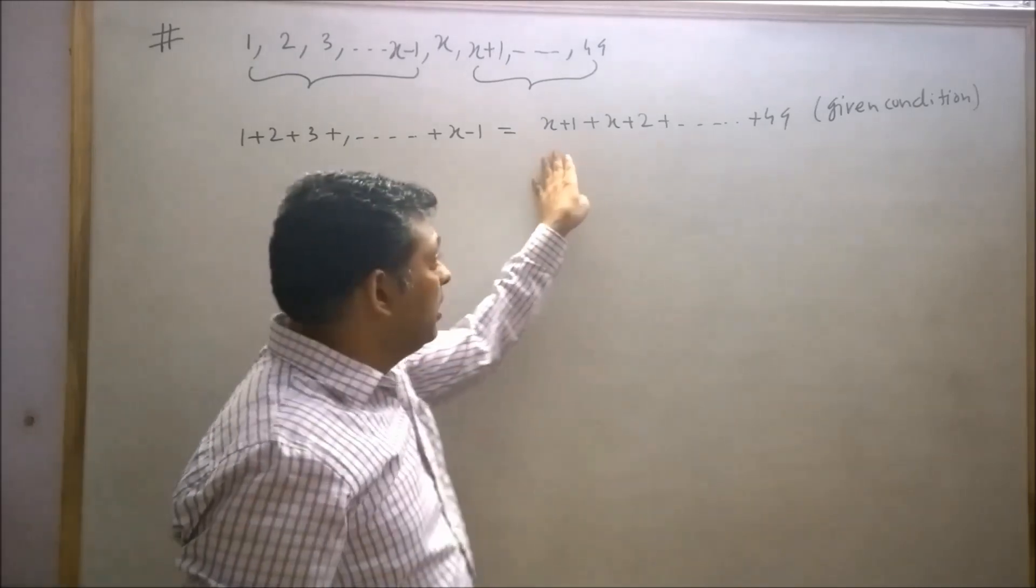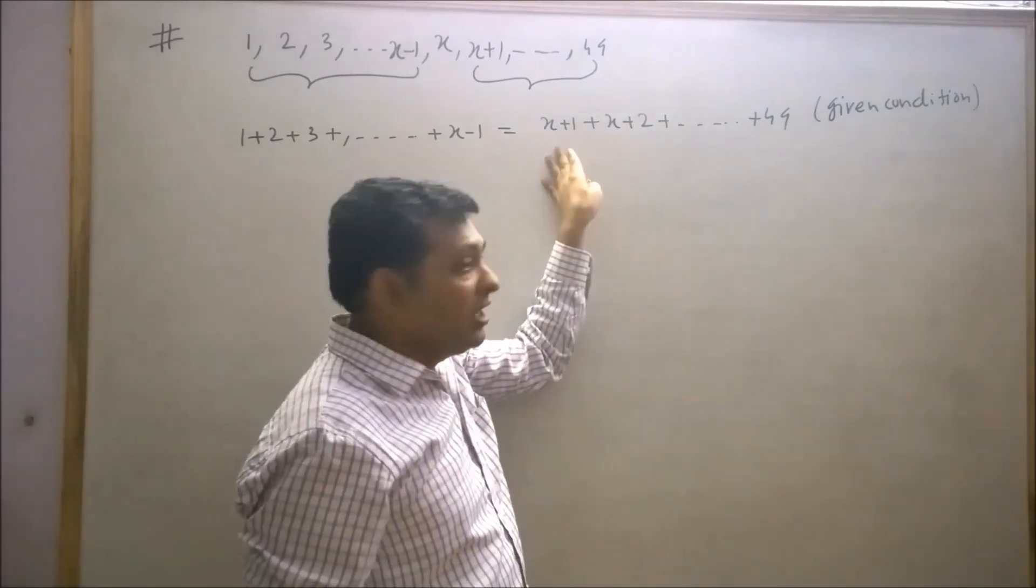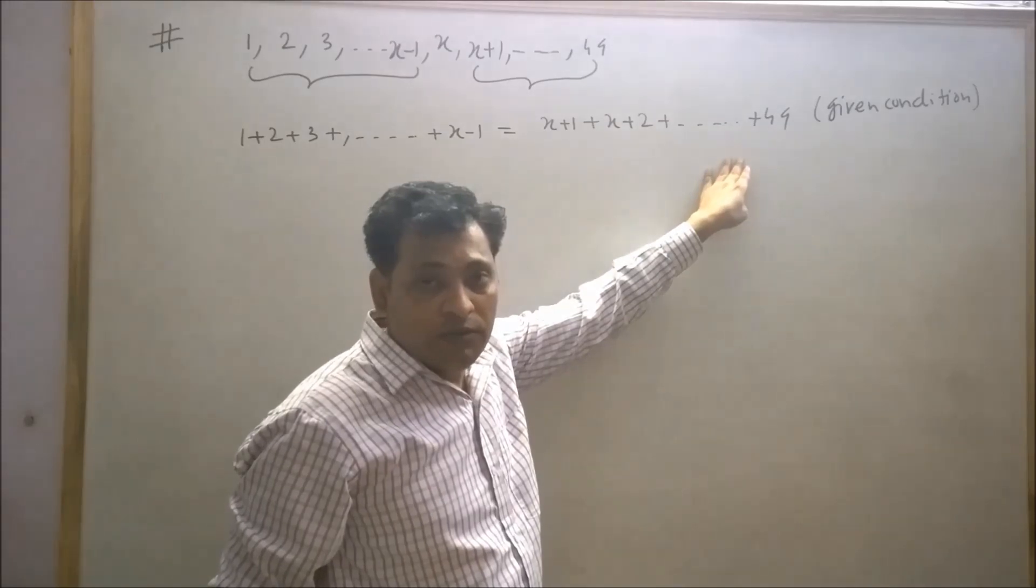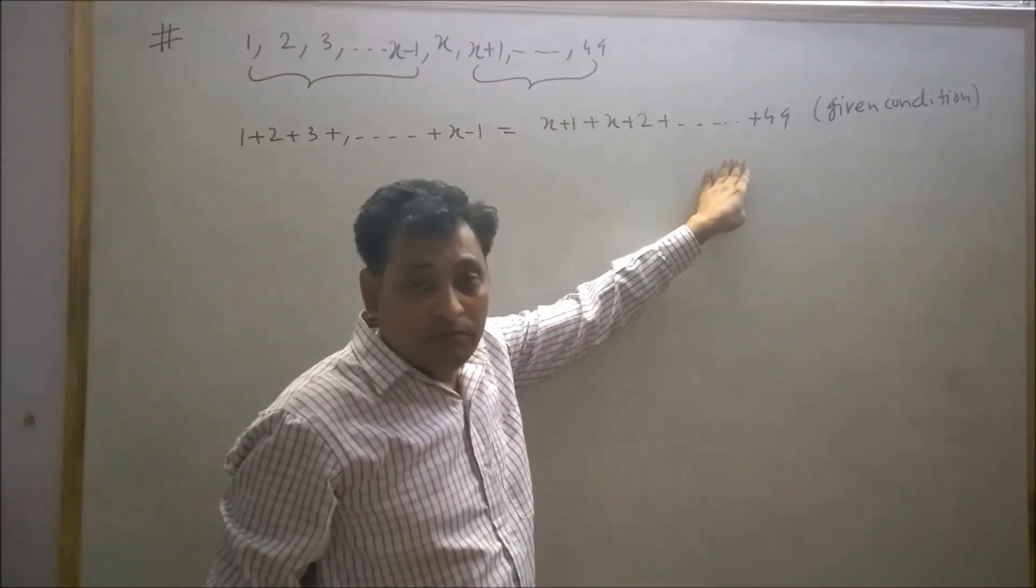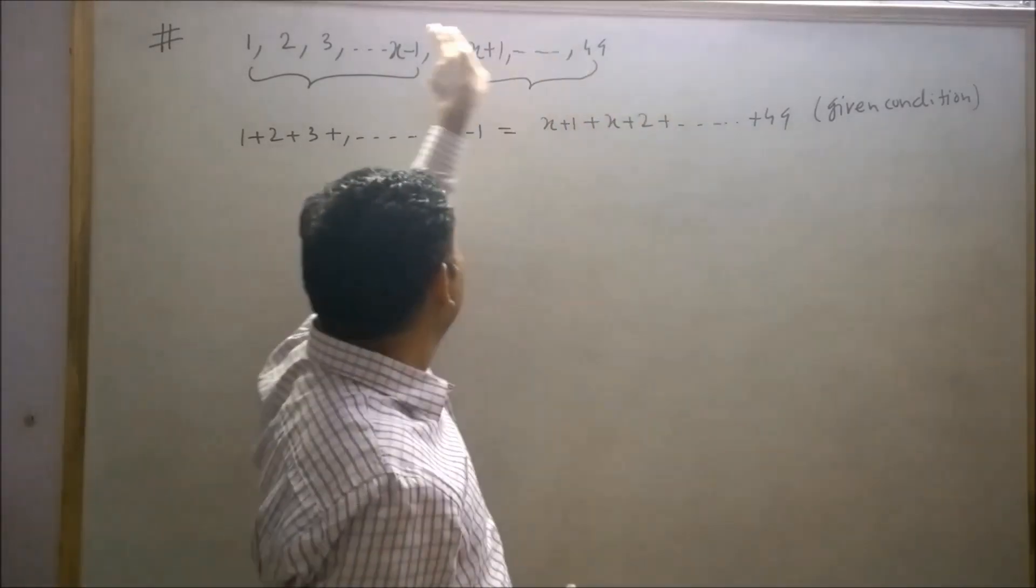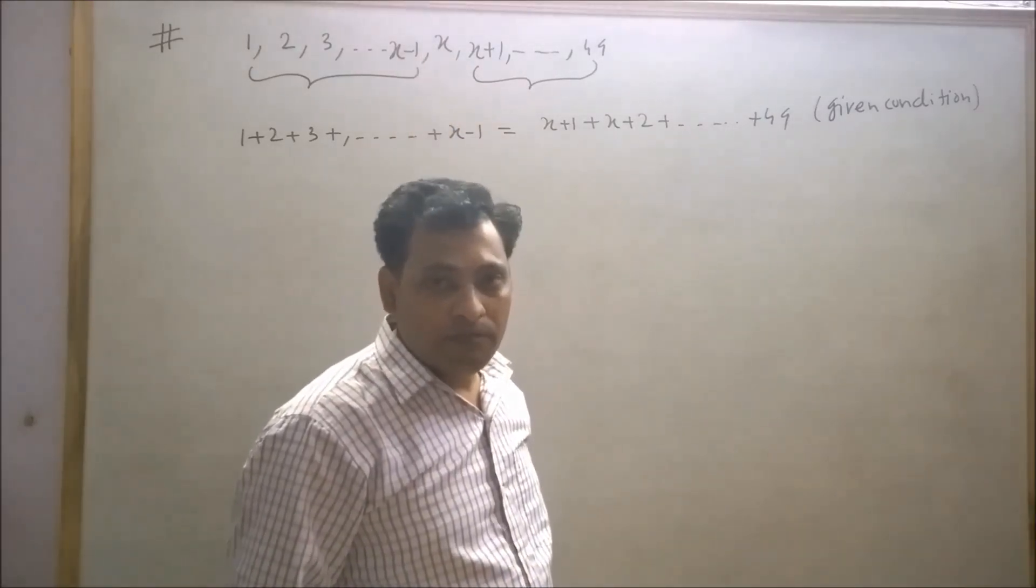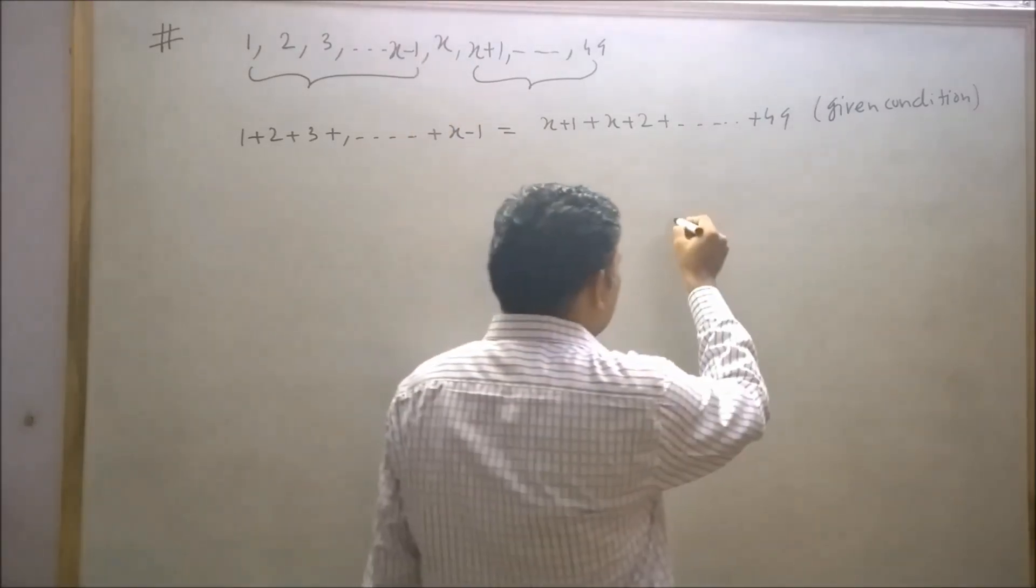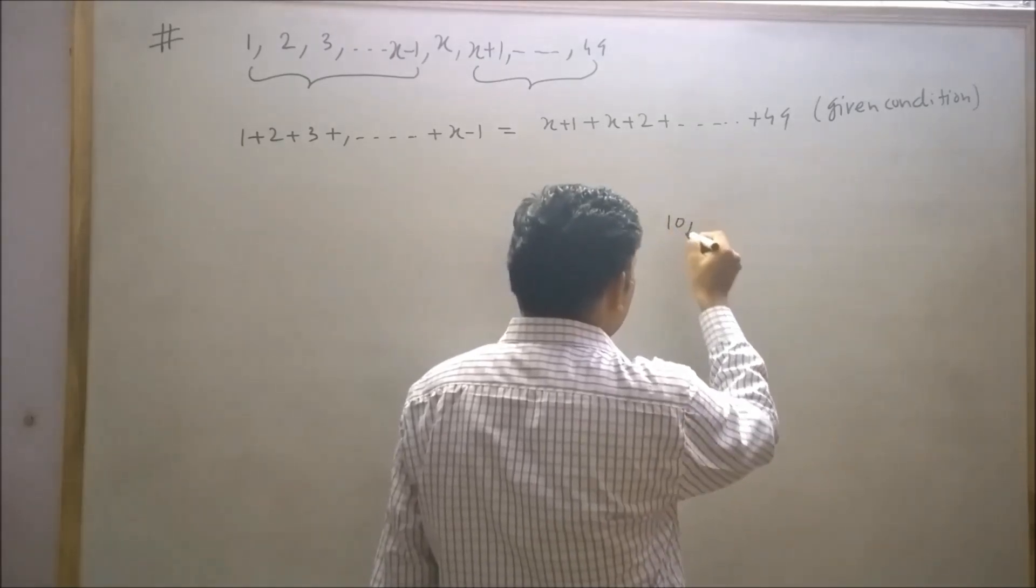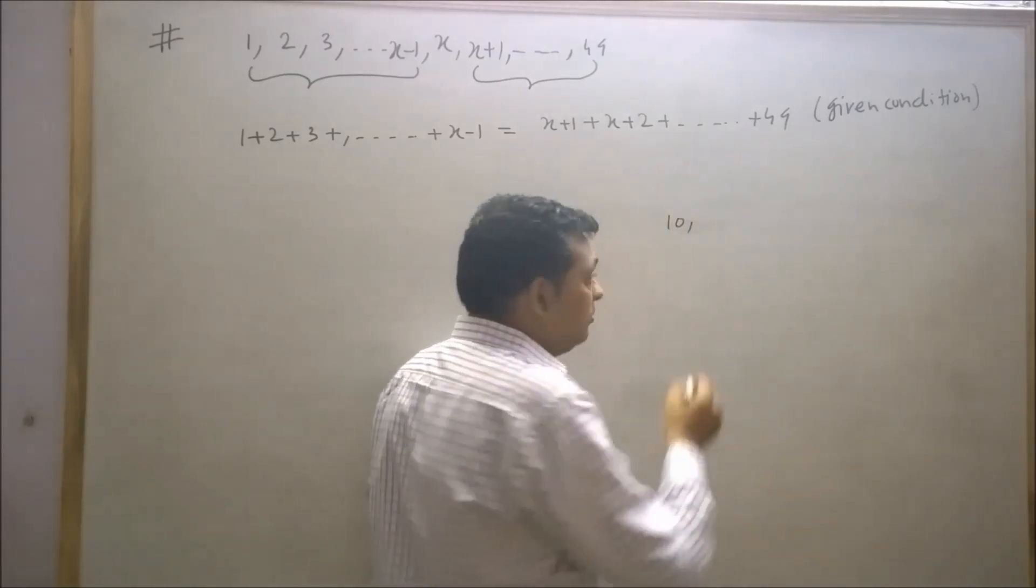If I ask how many terms are there from x+1 to 49, definitely your answer must be 49-x. Let's try to understand this point by taking an example.